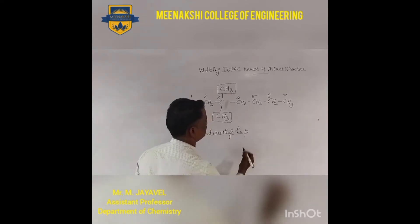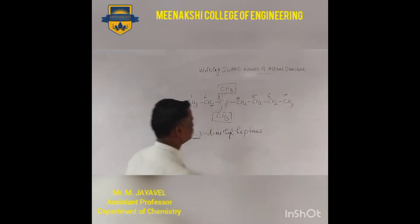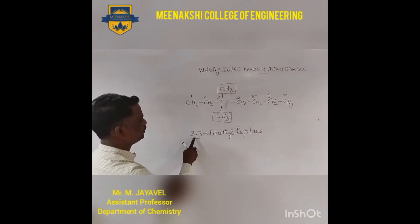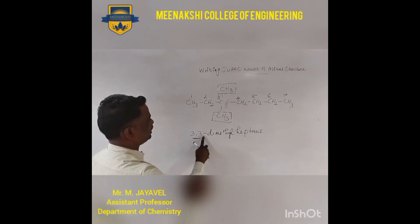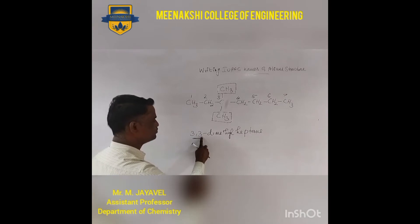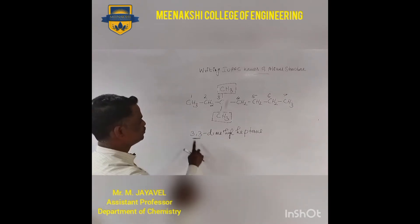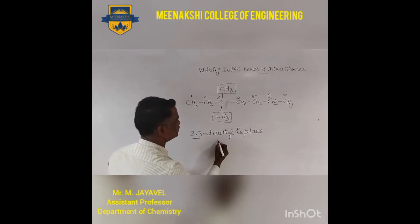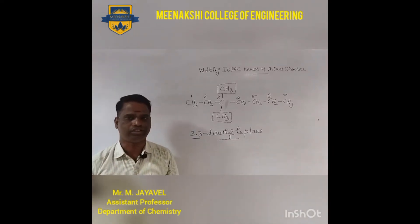The longest chain is 7, so heptane. Use a comma between the numbers and a hyphen between the number and the text. So 3,3-dimethylheptane is the correct IUPAC name of the given structure.